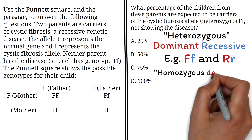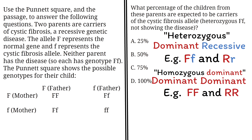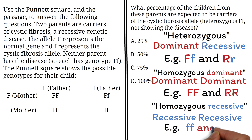A genotype can be homozygous dominant, which means the genotype is made up of two identical dominant alleles — both letters must be the same capital letters. For example, capital FF and capital RR. A genotype can also be homozygous recessive, meaning it is made up of two identical recessive alleles — both letters must be the same lowercase letters. For example, lowercase ff and lowercase rr.